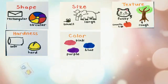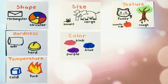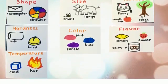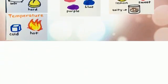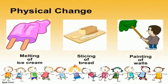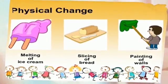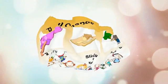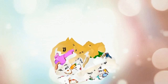A change in the size, shape, or state of matter is called a physical change. Examples of physical changes are the melting of ice cream, slicing of bread, and the painting of walls. All of these examples can easily return to their original state.